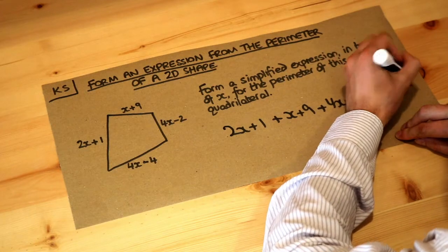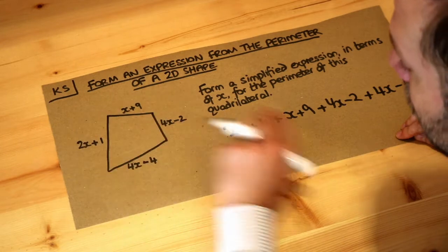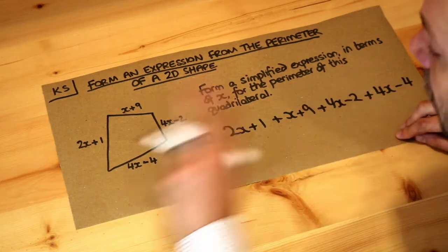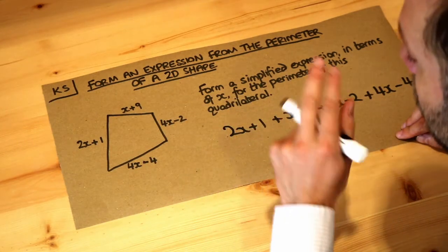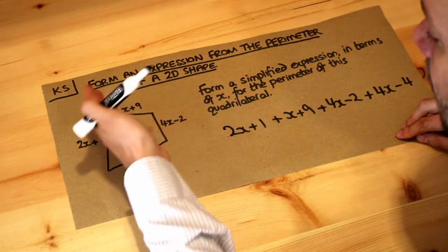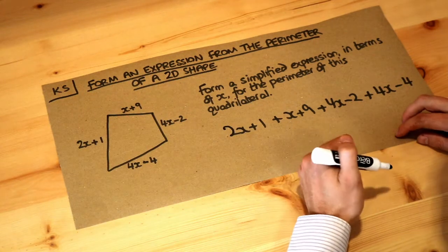Just because the lengths are algebraic and don't involve only numbers, that doesn't change how we do the question. We still find the perimeter by adding the lengths, whether numbers or algebraic expressions.